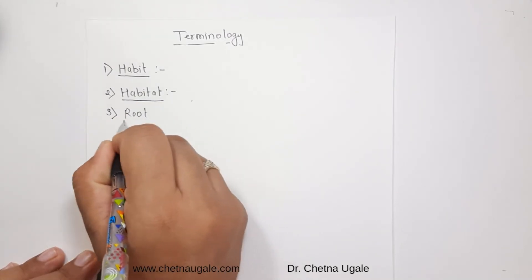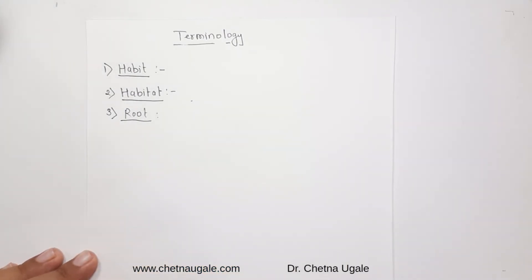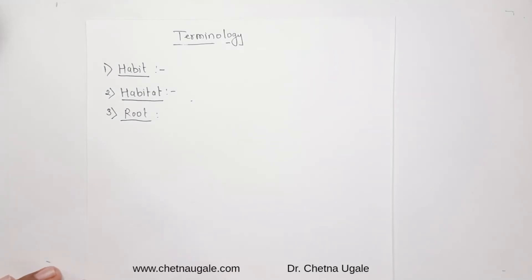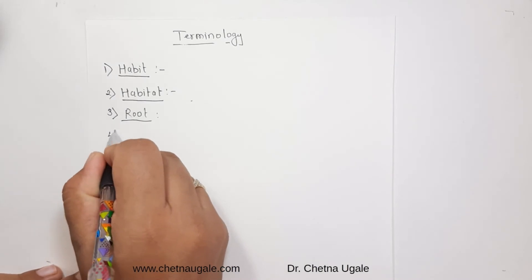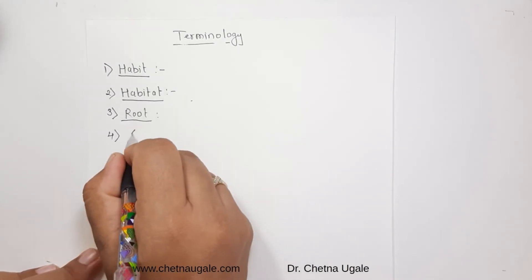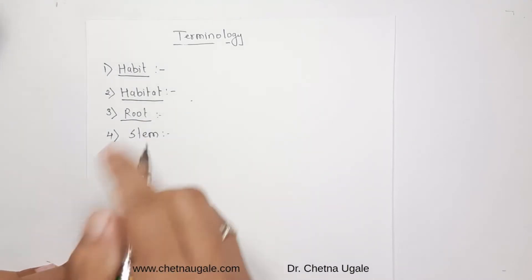The next terminology is root. Root is the underground part of the plant. Typically it is of two types: adventitious root system and tap root system, and sometimes a fibrous root system. In certain plants it shows modifications with respect to function and shape, like fusiform, conical, napiform, fasciculate, nodular, etc.